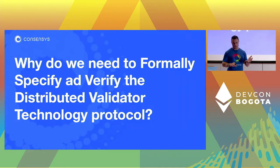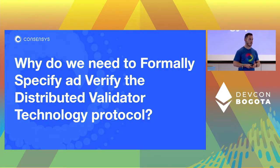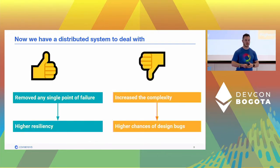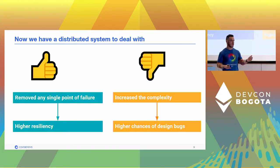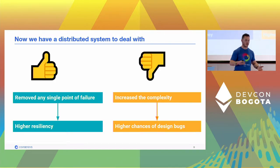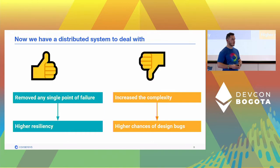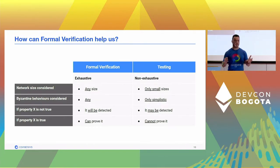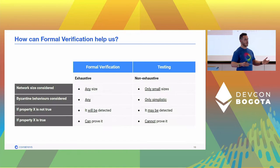Now we know why it's important. Why do we need to formally specify and verify such a protocol? We've removed any single point of failure and have higher resiliency. However, there's no such thing as a free lunch — we've increased the complexity of the system. Now we have a distributed system in place of a single piece of code, so we have higher chances of bugs. This is where formal verification can really help us.